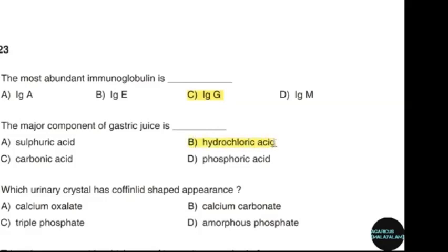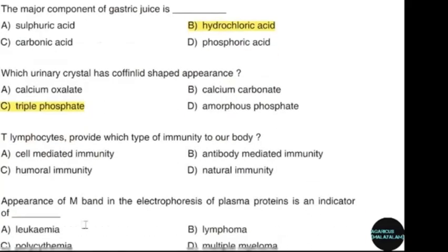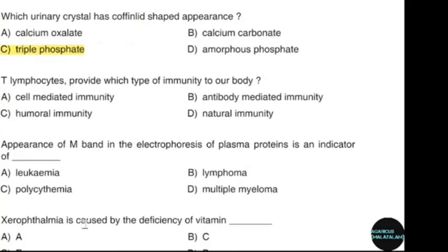Which urinary crystal has a coffin-lid shape appearance? Correct answer option C: Triple phosphate. T-lymphocytes provide which type of immunity to our body? Correct answer option A: Cell-mediated immunity.